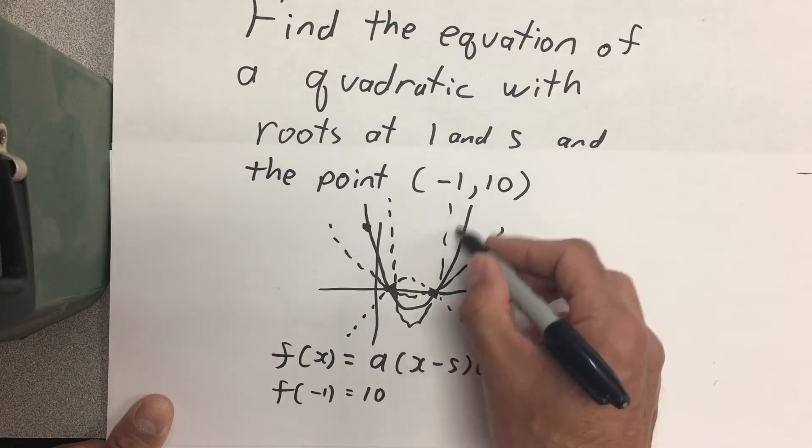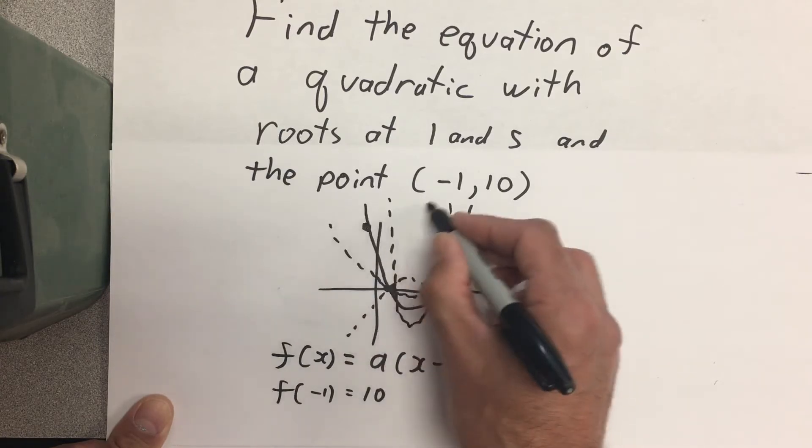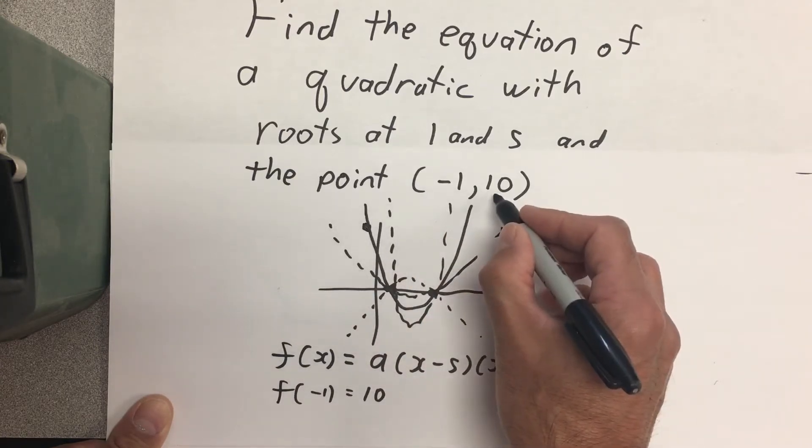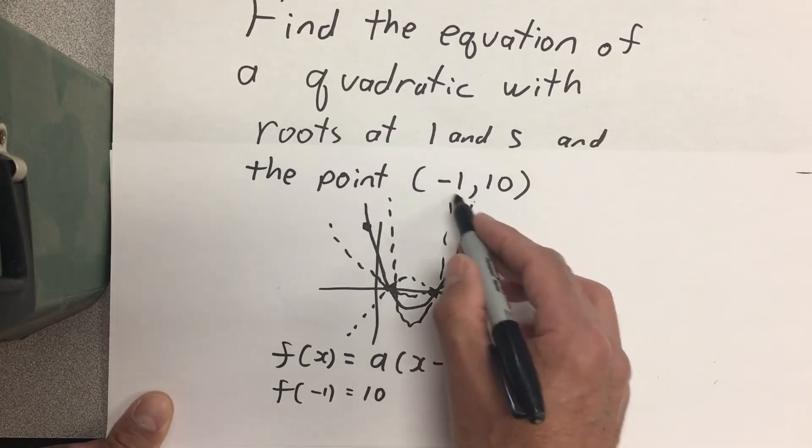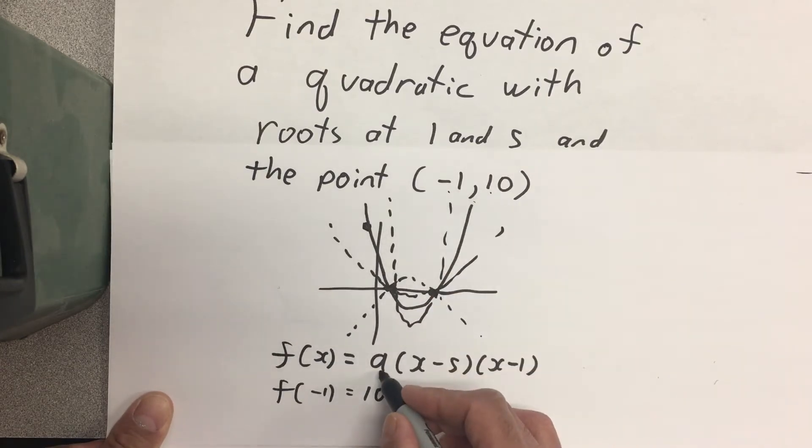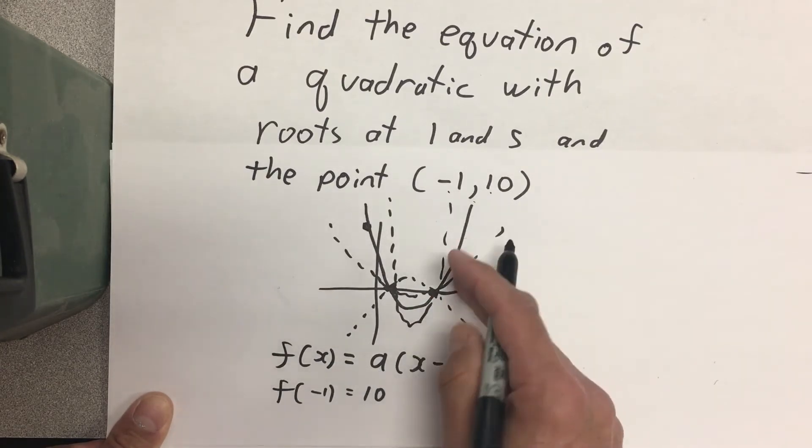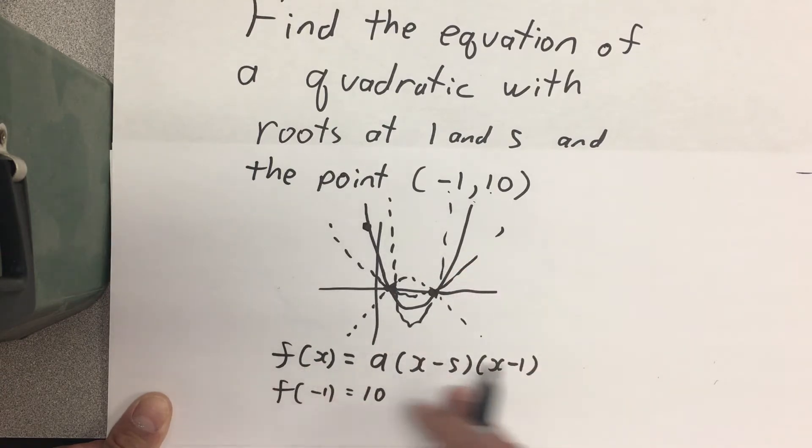However, there's only one such quadratic that goes through this point, (-1, 10). I'm going to use that value to find a, and then when I plug a's value into this, that's my equation.